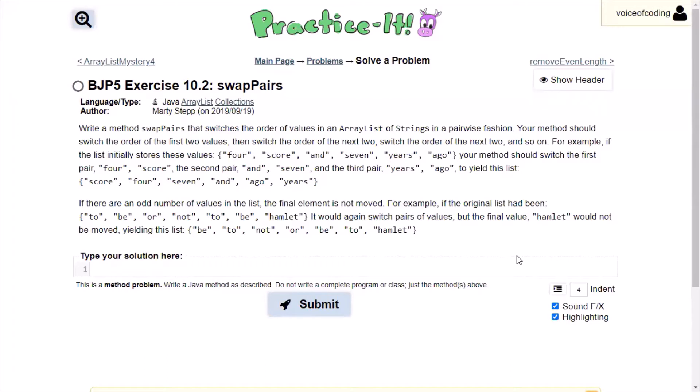Hello, today we're going to be solving exercise 10.2, swap pairs. Essentially what the problem wants us to do is swap every two terms in an ArrayList. If it's an odd size, then we'll just leave the last term as it is.